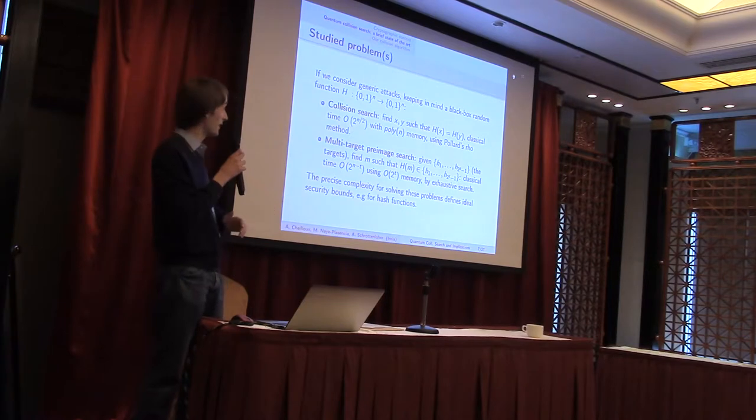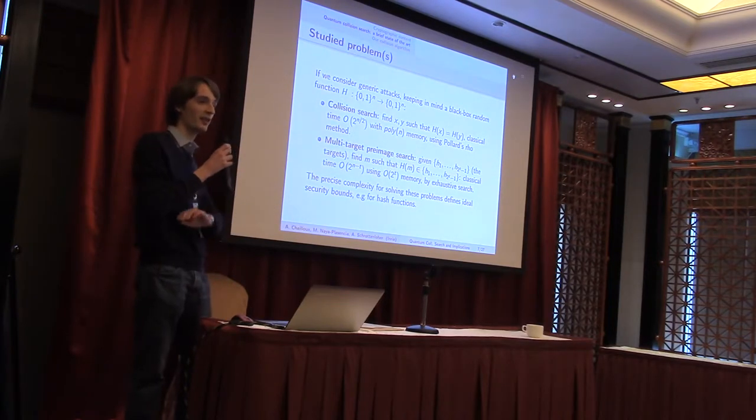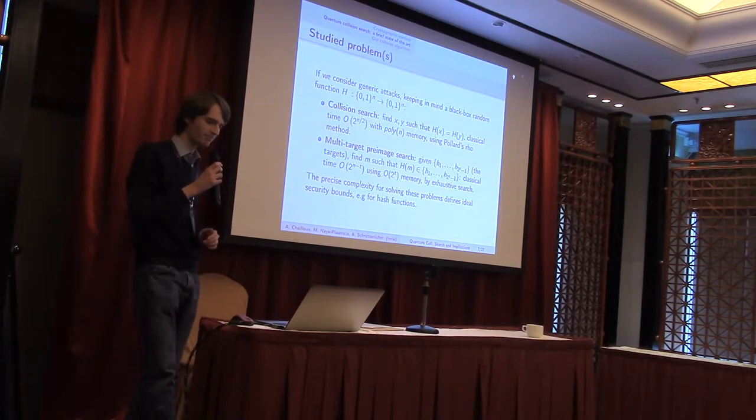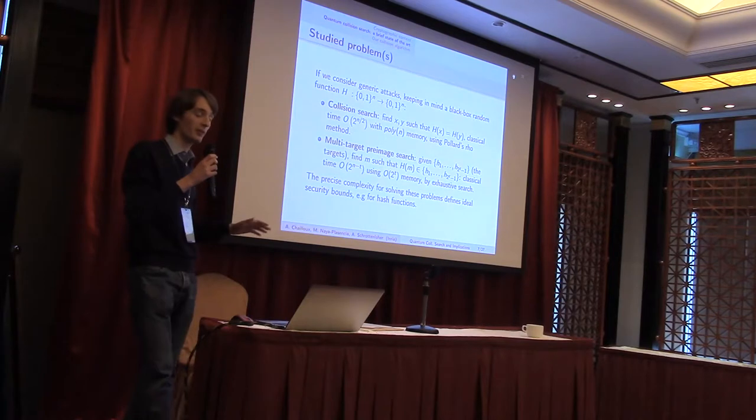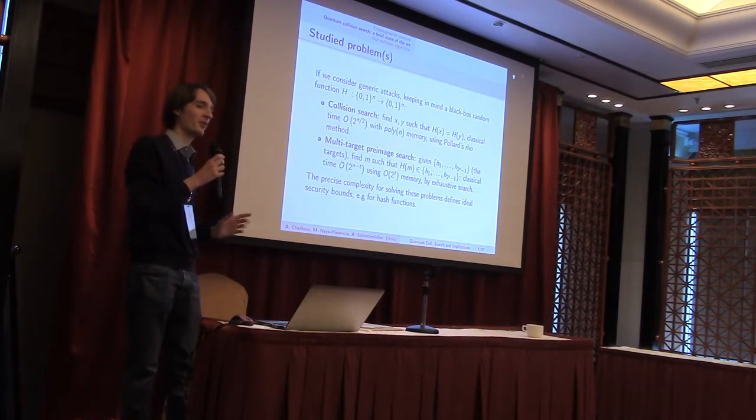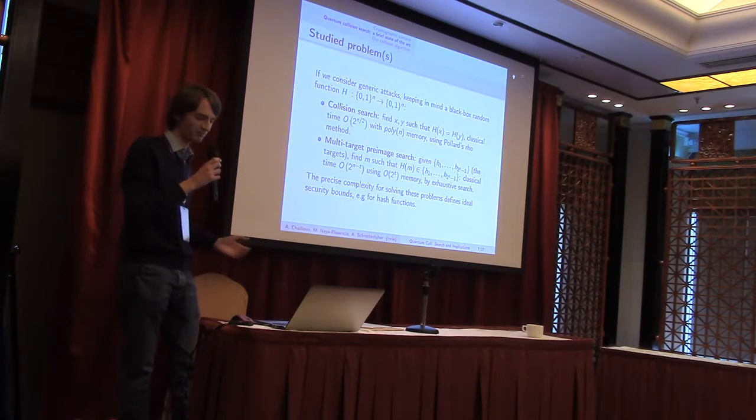And we look for two elements having the same image. In the classical world, this is done in 2 to the n over 2, the square root of the domain, with a polynomial memory using Pollard's rho method. We have a related problem, which is multi-target pre-image search, searching for the pre-image of one target among many. And this can be done using exhaustive search.